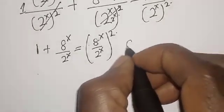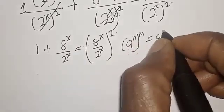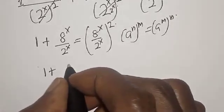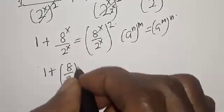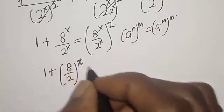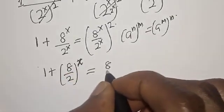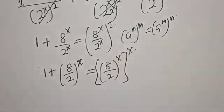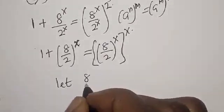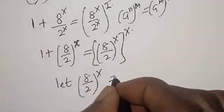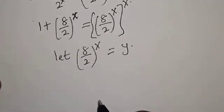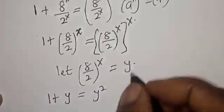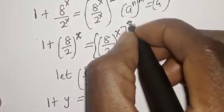Remember that a raised to power n raised to power m equals a raised to power m raised to power n. So 3 raised to power s equals 8 raised to power s. Now let y equal 4 raised to power s, all squared, giving us 1 plus y equals y squared.